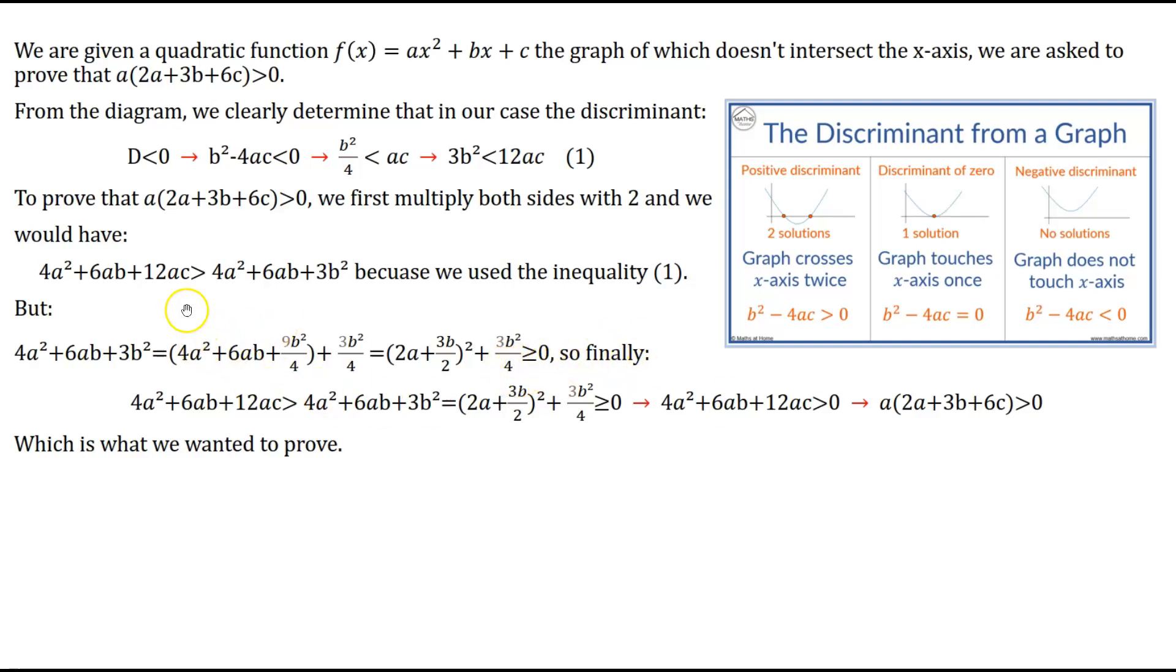So finally, we can use this inequality over here, and the transformation of the right hand side of this inequality will say that 4a² + 6ab + 12ac is greater, as we proved over here, than 4a² + 6ab + 3b², which we just determined is greater or equal to zero.